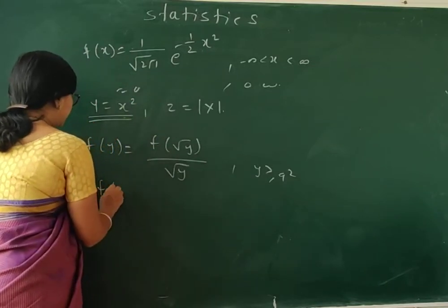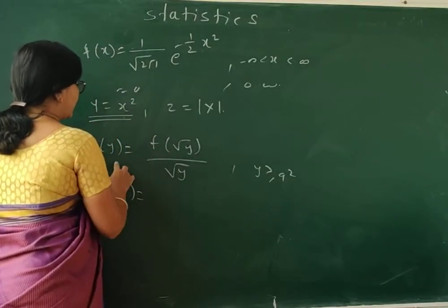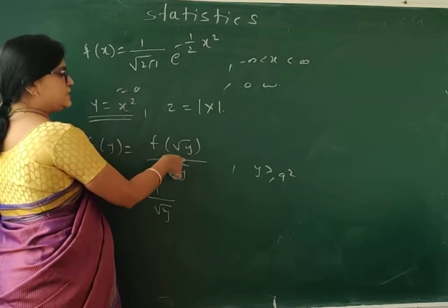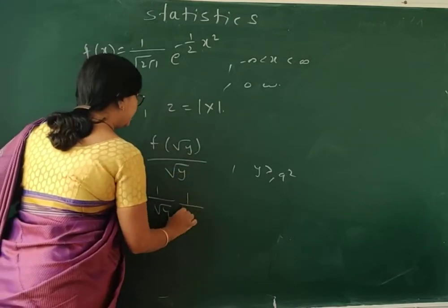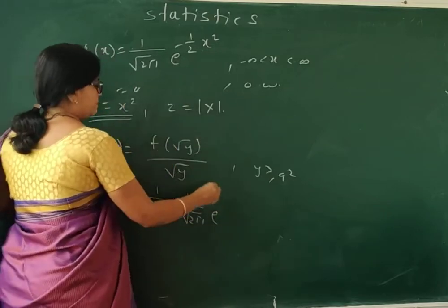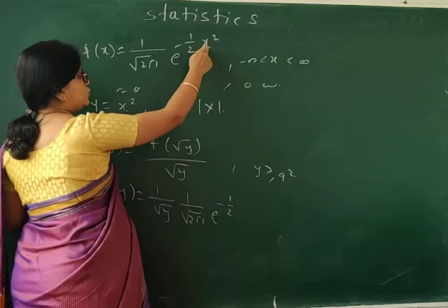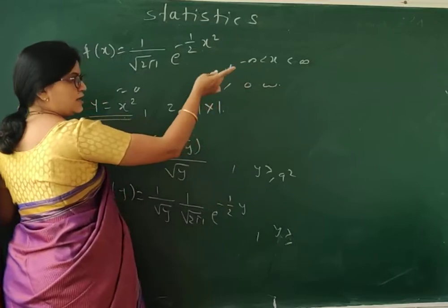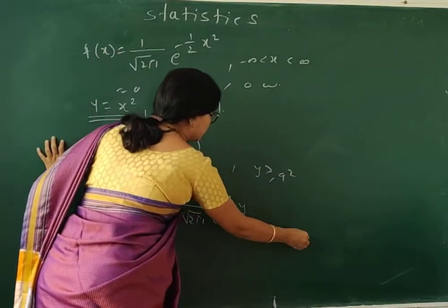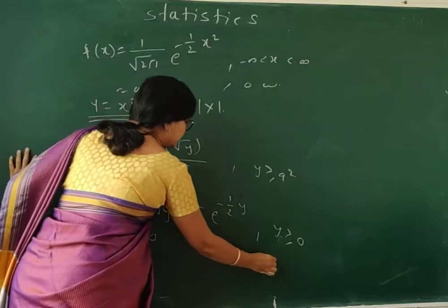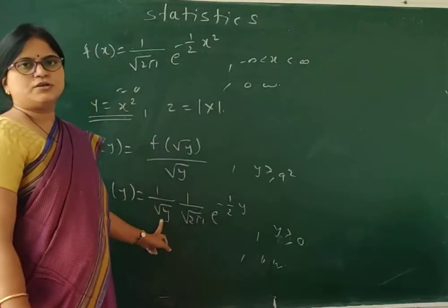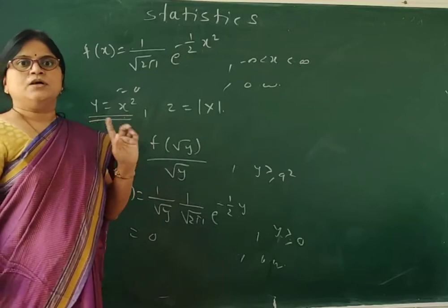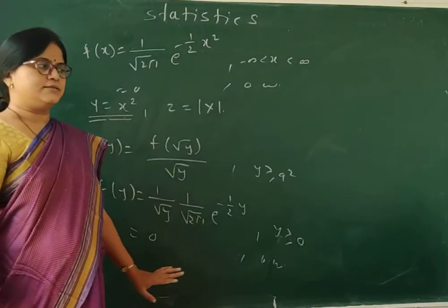So f_Y(y) = (1/√y) · f(√y). Substituting f(√y) from the normal distribution, we replace x with √y, giving e^(−y/2). So f_Y(y) = (1/√y) · (1/√(2π)) · e^(−y/2), for y > 0. That is the distribution of Y = X².